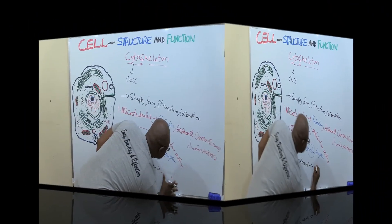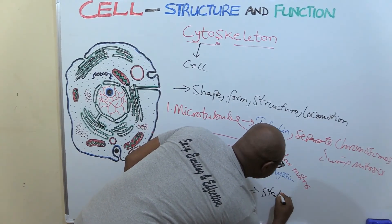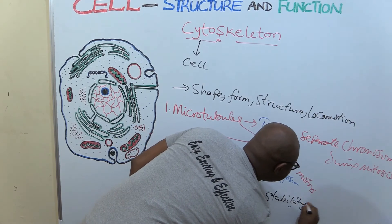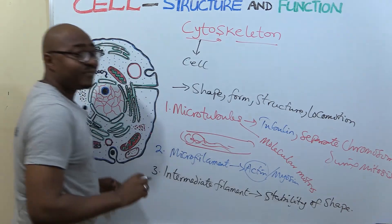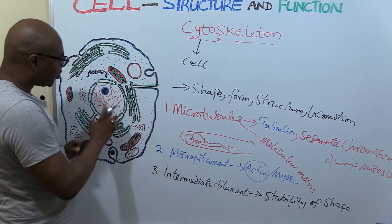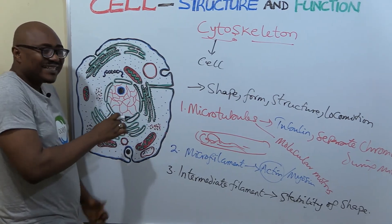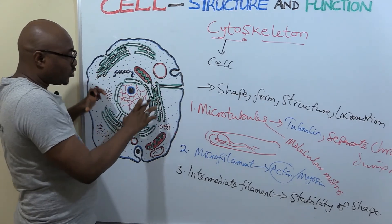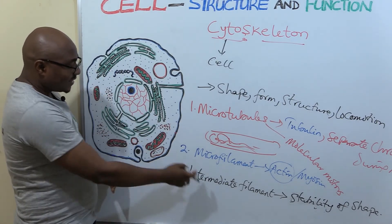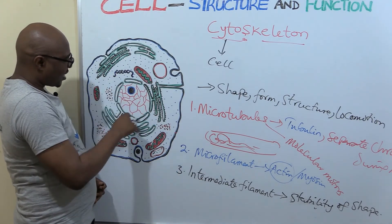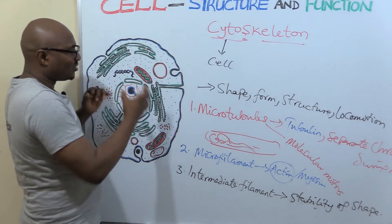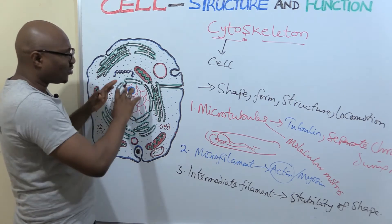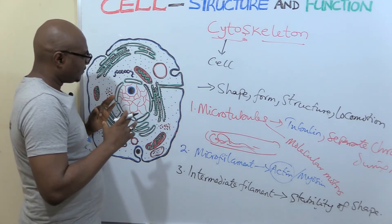Then now, it helps with stability of shape. Then another very vital one in very close conjunction with the nucleus, it helps to anchor the nucleus. This intermediate filament, it surrounds the nucleus, it helps to keep the nucleus in place. Because the nucleus is not supposed to be moving, and the nucleus is the biggest organelle, very important, the control center.